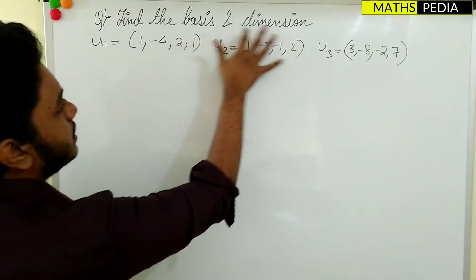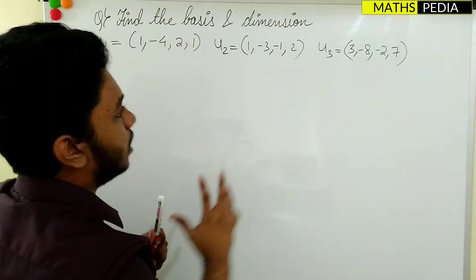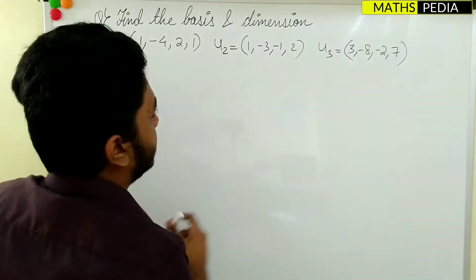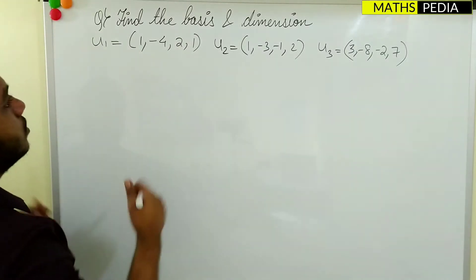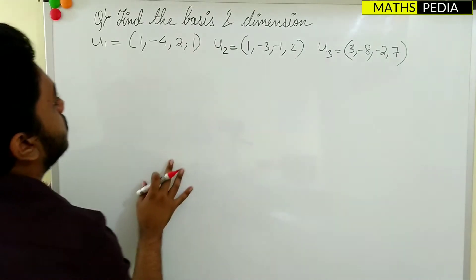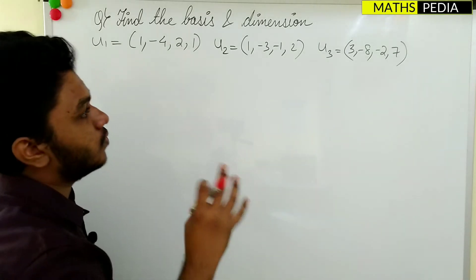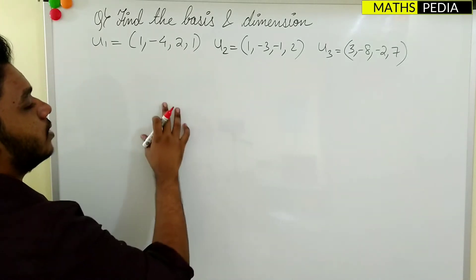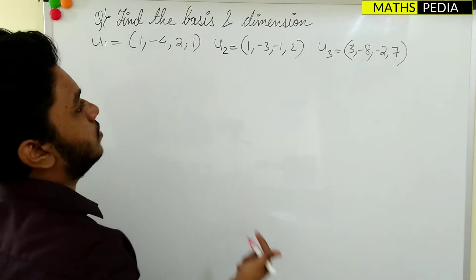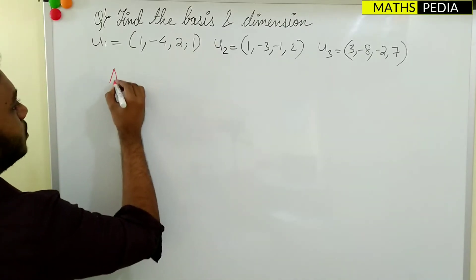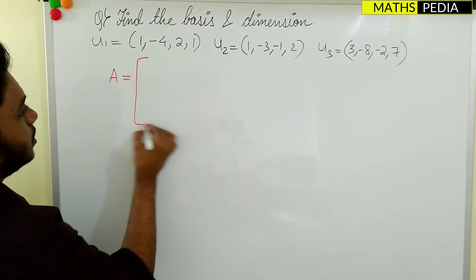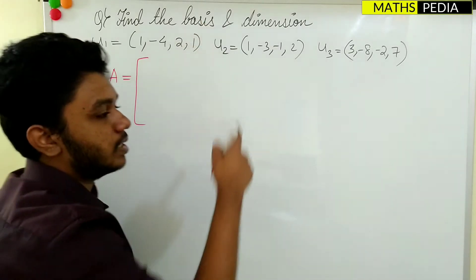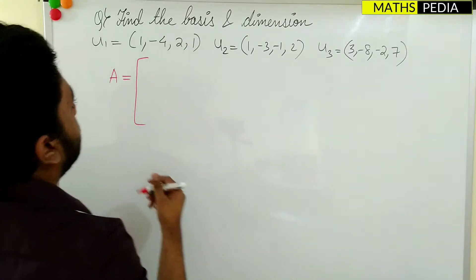In this problem we will find the basis as well as the dimension. Whenever three vectors are given, each containing four elements, the first thing you need to do is form a matrix. After that, you need to reduce it into echelon form. Note that forming the matrix is quite specific for finding the basis and dimension.